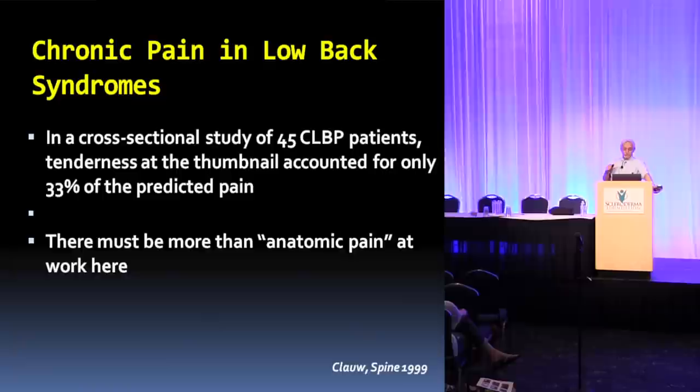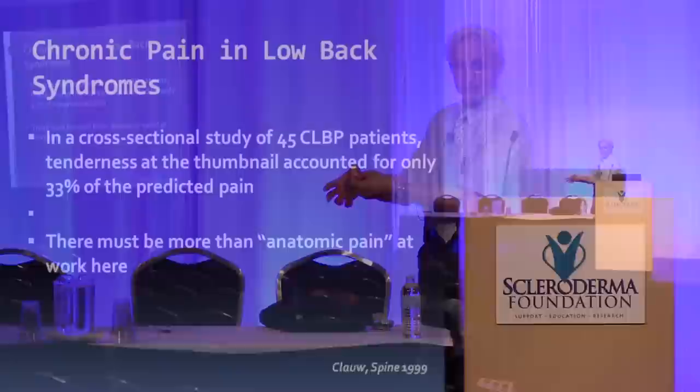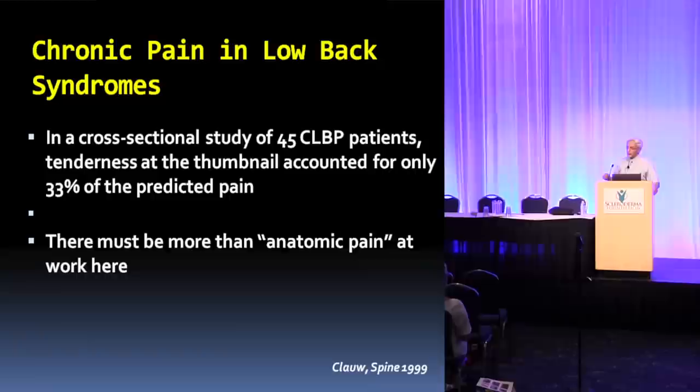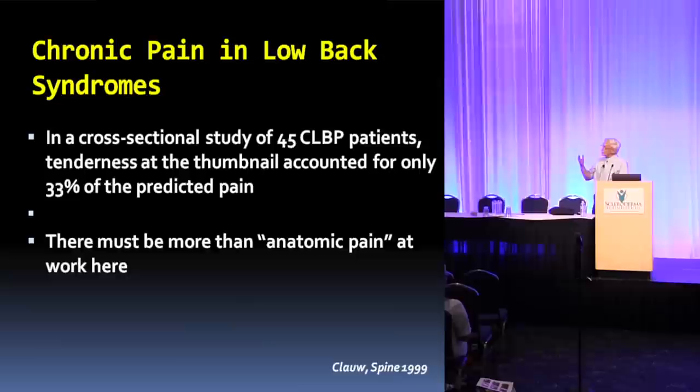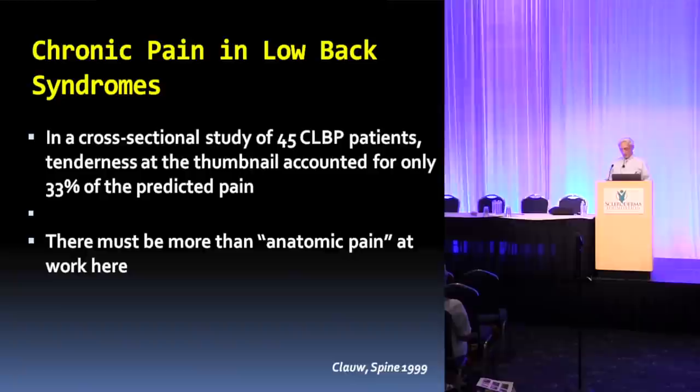Let's talk about chronic low back pain. One test of localized pain — you can try it yourself: push down on your thumb hard, not just a little, but hard. It hurts. This is a typical way to test if there's peripheral pain going on. If you press hard and try to correlate that with low back pain, 33% of the time it helps explain it. But typical peripheral pain doesn't explain most of it. There must be more going on than just the anatomic pain.